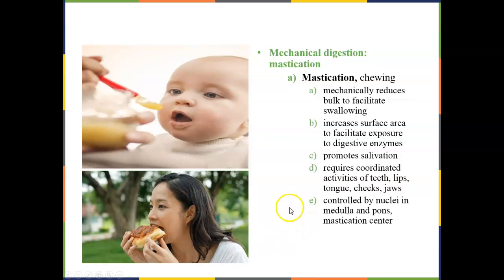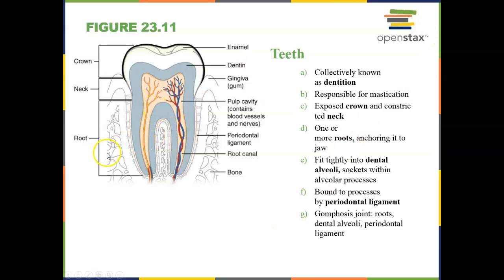Mastication is stimulated by regions of our medulla and pons, which send signals to our masseter muscle and the external and internal pterygoid muscles to help us chew our food. Teeth start emerging around six months and are the structures responsible for allowing us to eat more solid items.